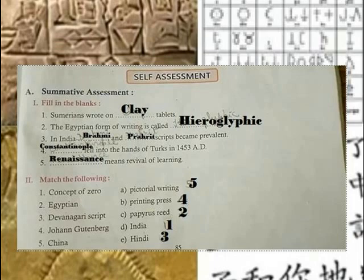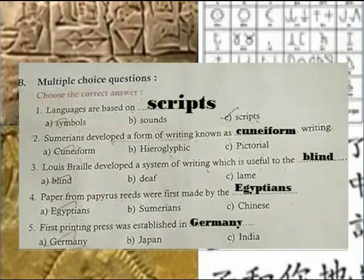Constantinople fell in 1453. The Renaissance means the revival of learning and many masterful concepts. The concept of zero originated in India. The Egyptian papyrus and Devanagari script were significant writing developments. Johan Gutenberg invented the printing press, while China developed pictorial writing. Language has been passed on through these various scripts.